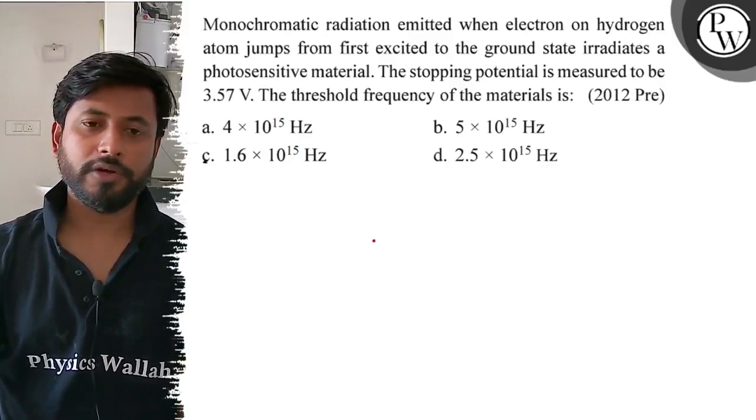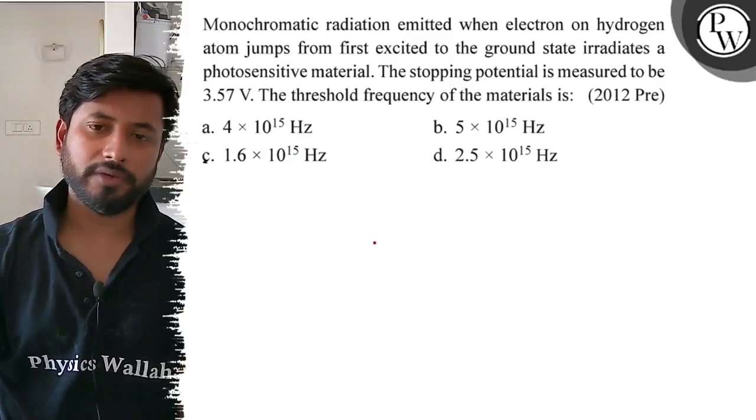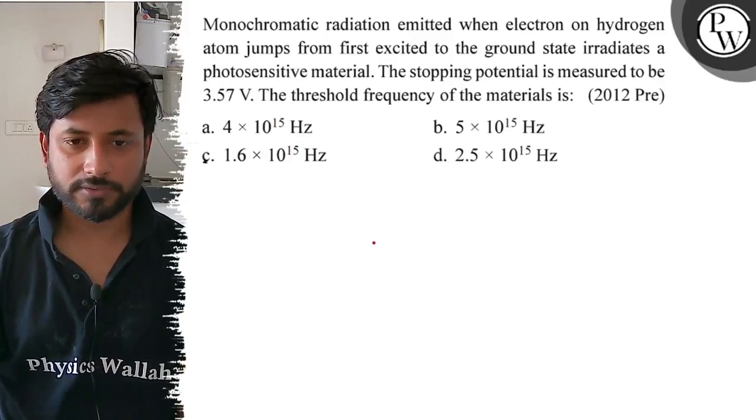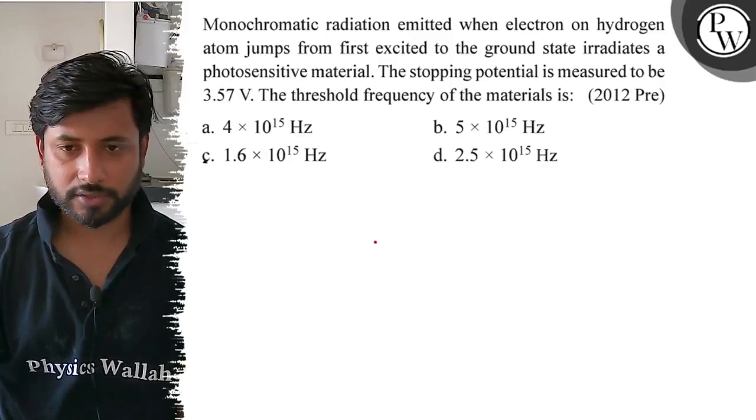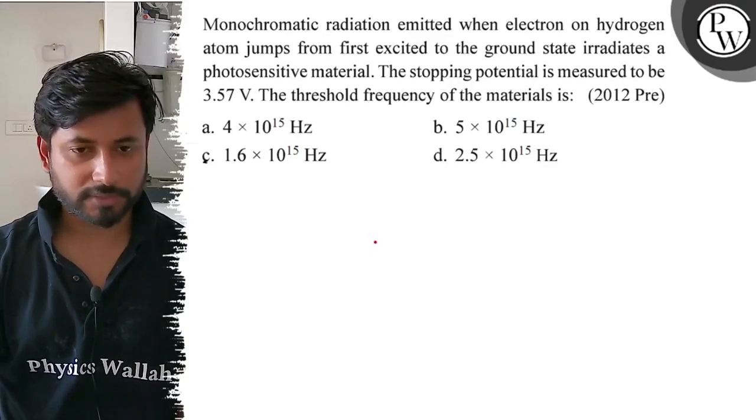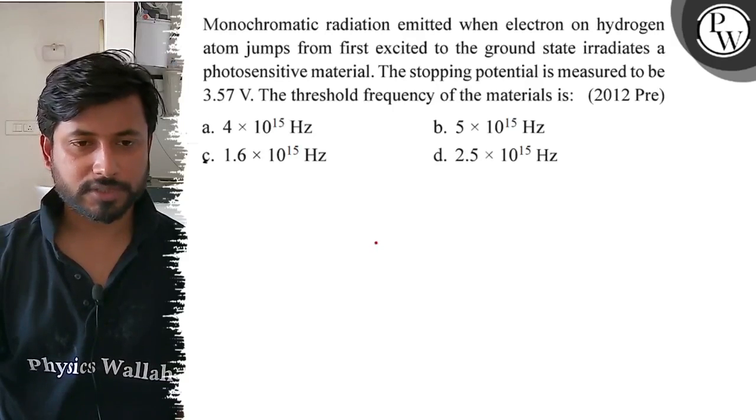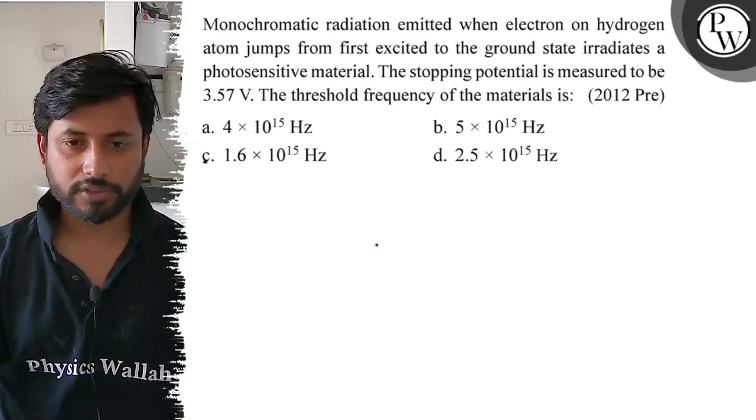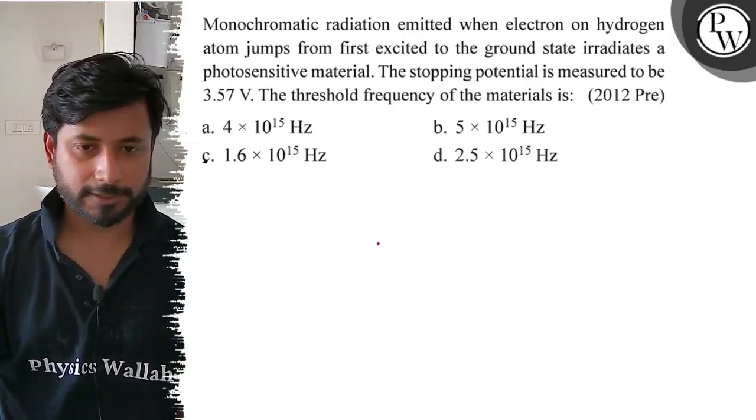Hello, let us see this question. Monochromatic radiation emitted when electron on hydrogen atom jumps from first excited state to ground state irradiates a photosensitive material. Stopping potential is measured to be 3.57 volt. The threshold frequency of the material is: